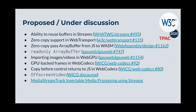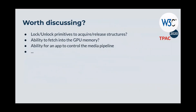Some of these proposals started a long time ago, so it may be useful to review their status. There may also be additional ideas worth discussing — for instance, the ability to fetch directly into GPU memory, or the ability for an application to be explicit about the media processing pipeline it's going to follow. If you could tell the user agent in advance what processing steps you're going to do on a media stream, there may be a way to optimize things.